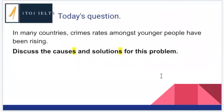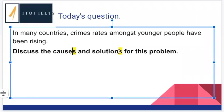The essay we are looking at today — which we started a couple of weeks ago — was: 'In many countries, crime rates among younger people have been rising. Discuss the causes and solutions for this problem.' Why have I highlighted the essay type? We have multiple ideas, so we need to be giving two causes and two solutions. In a multiple idea essay with two main ideas, we're going to have two explanations, but how many examples do we have in each main body paragraph? Only one.